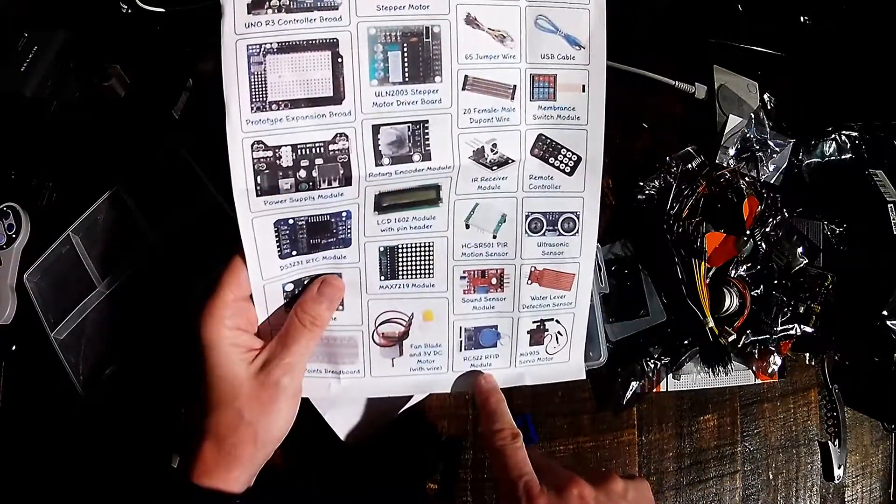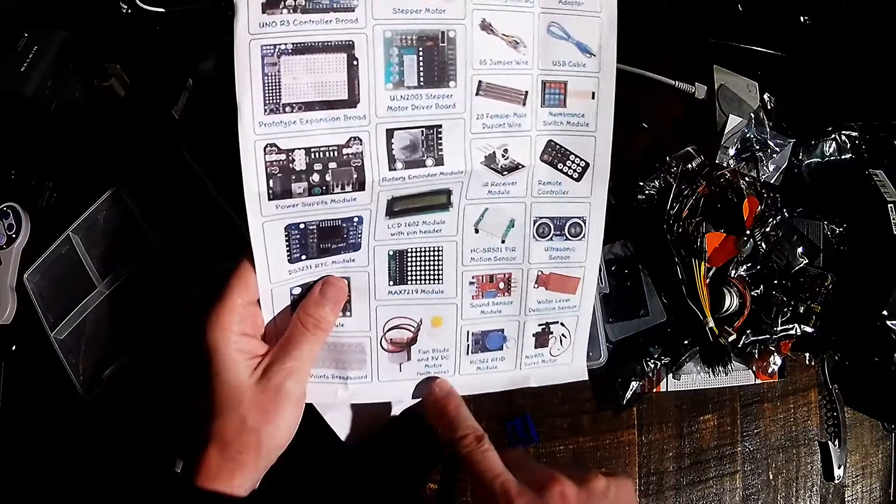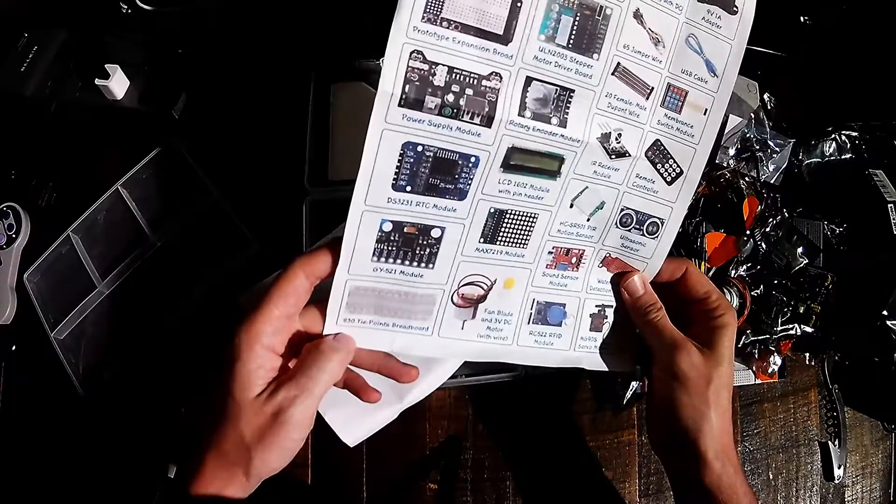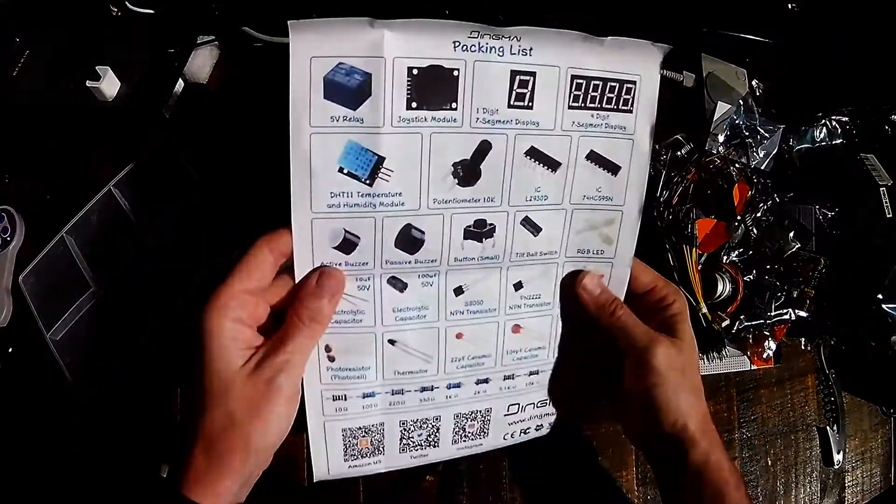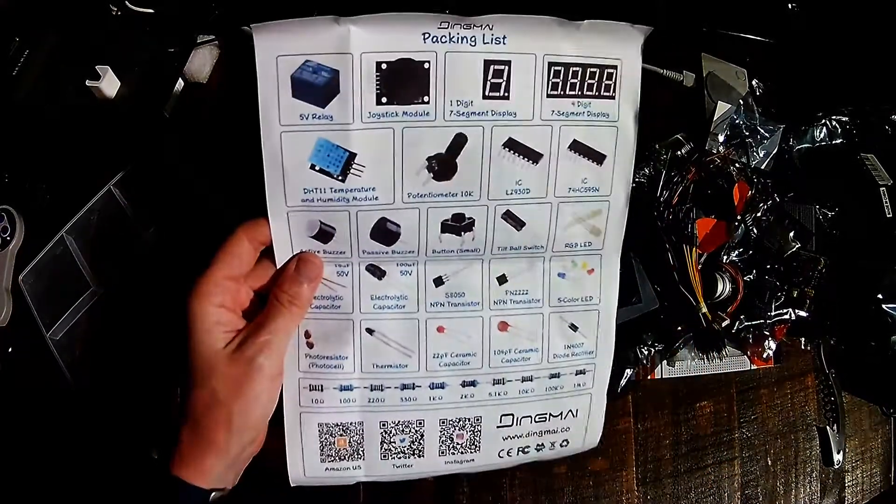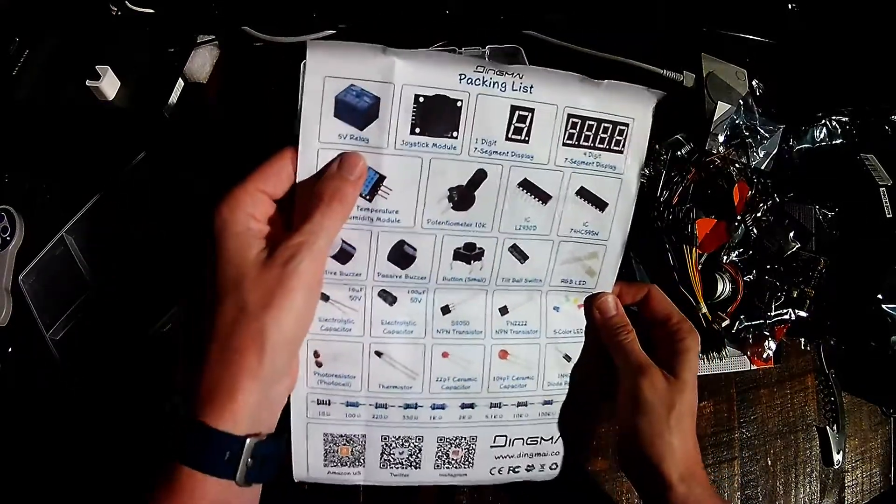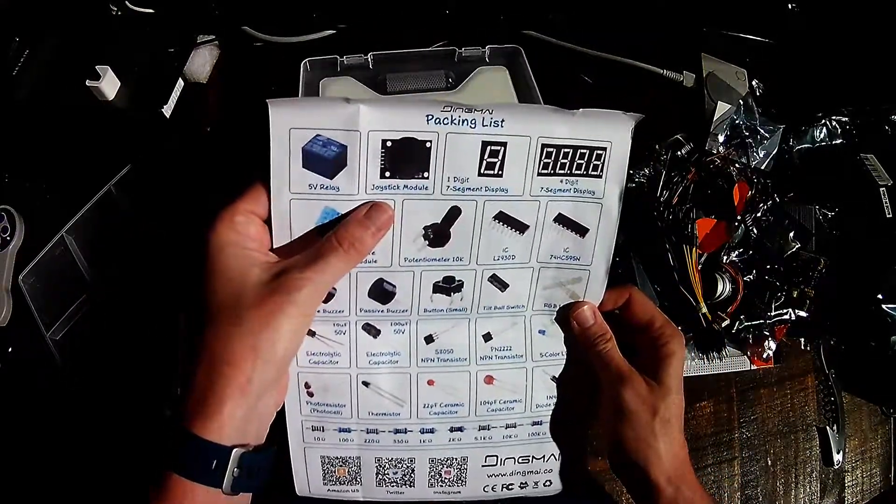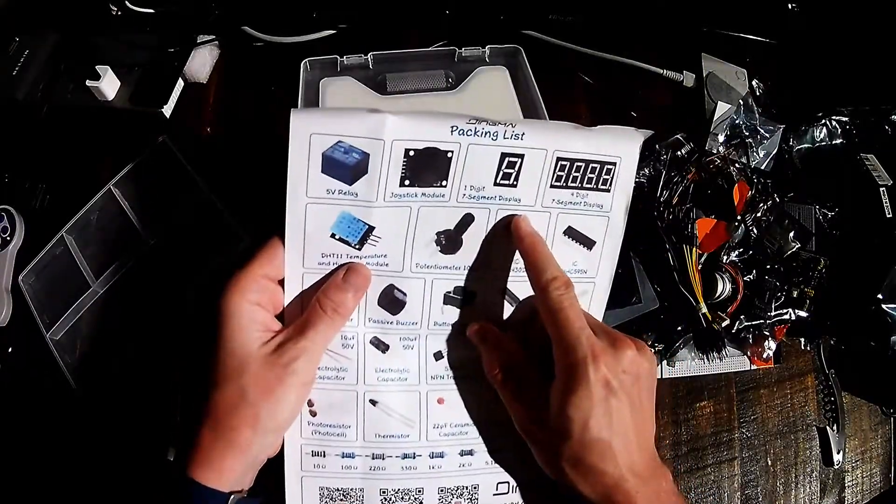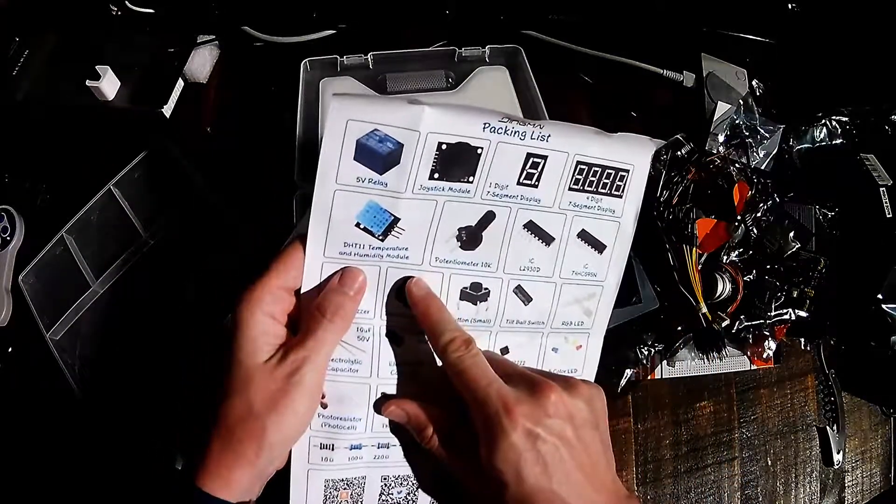RFID module. Servo motor. Fan blade. And 3 volt DC motor wire. And then there's the large breadboard that we saw. So there's the H-bridge. L2930D. Don't remember what that does. You've got the 5 volt relay. Joystick module. One digit, seven segment display. You've got a four digit, seven segment display. You've got the temperature humidity module.